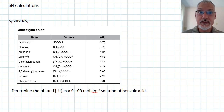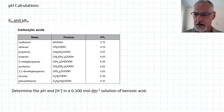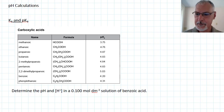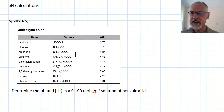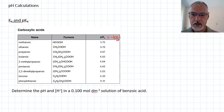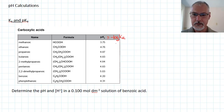Welcome to this, our second program looking at pH calculations. Here I have a table out of our IB data booklet that deals with what we call weak carboxylic acids. We can see the name of the acid, its formula, and something called the pKa. pKa, by definition, is the negative log of the acid ionization constant.